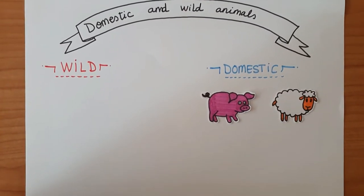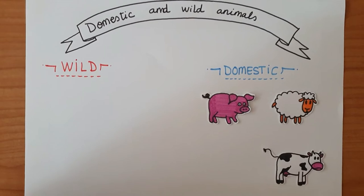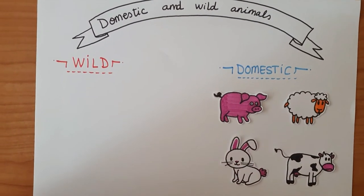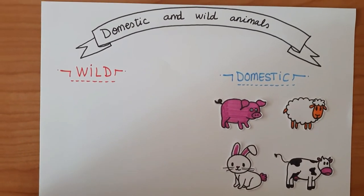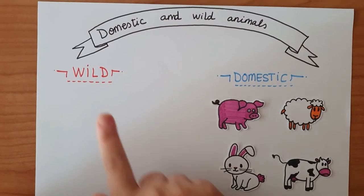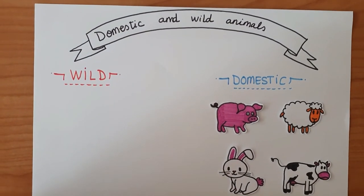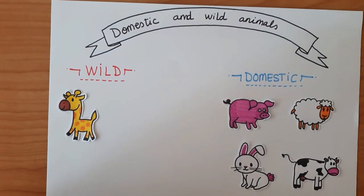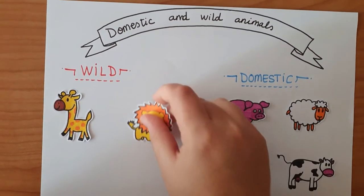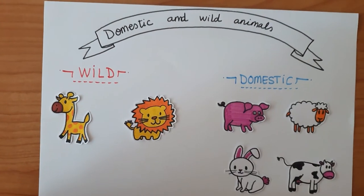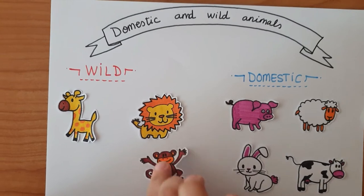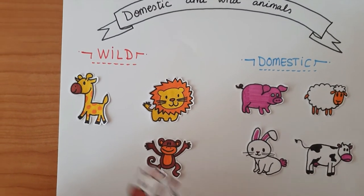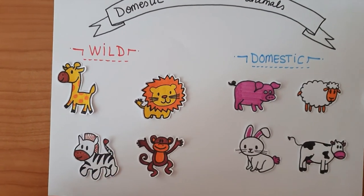Some examples of domestic animals are the cow and the rabbit. Some examples of wild animals are the giraffe, the lion, the monkey, and the zebra.